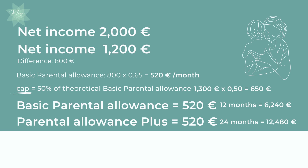This means the parents will ultimately receive twice as much parental allowance in total. Total basic parental allowance for 12 months is 520 euros × 12, which is 6,240 euros. And total Parental Allowance Plus for 24 months is 520 euros × 24, which is 12,480 euros.